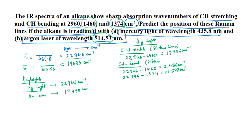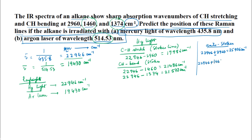For the mercury light anti-Stokes lines: the C-H stretch will be at 22946 + 2960 = 25906 cm⁻¹. For the C-H bends, we will have lines at 22946 + 1460 = 24406 cm⁻¹ and at 22946 + 1374 = 24320 cm⁻¹.